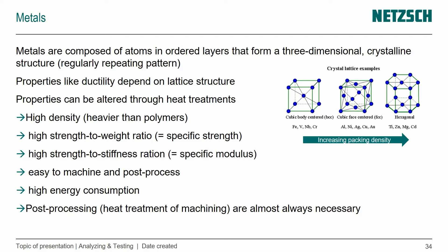We have three examples of different crystal lattice structures: the cubic body-centered, the cubic face-centered, and the hexagonal structure. With all of these you see a difference in the packing pattern and the packing density, and this has a huge effect on the ductility of the material. So the properties of metals depend on the lattice structure that they form.